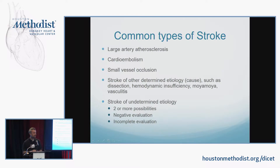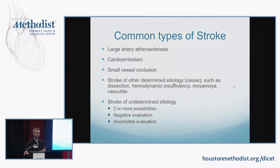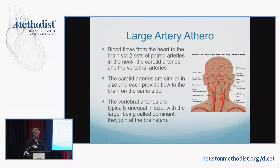The common types of stroke are: large artery atherosclerosis, cardioembolism, small vessel occlusion, strokes of other determined etiologies such as dissection, hemodynamic insufficiency, Moya Moya, or vasculitis, and what's sometimes called cryptogenic stroke or stroke of undetermined etiology. You can end up in the cryptogenic category because there are competing possibilities and you're not sure which it is, because the evaluation was done and the cause is unknown, or because the evaluation was not complete.